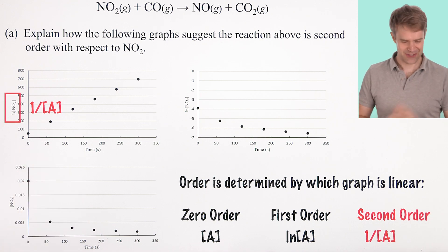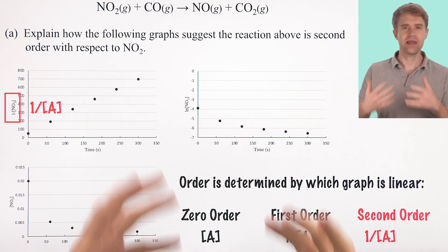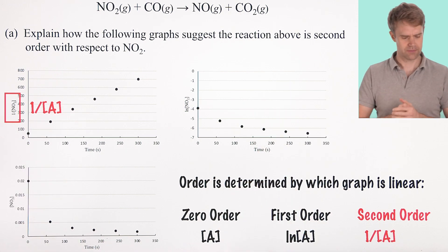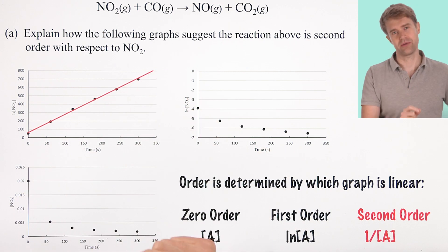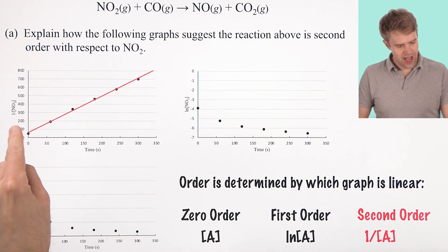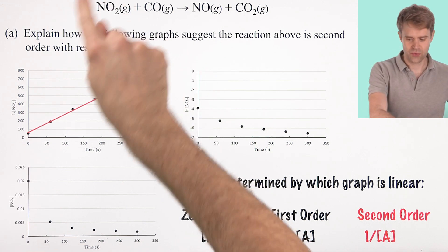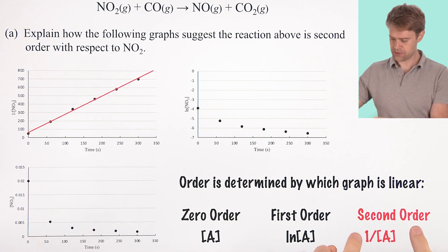There's mathematical reasons for the pattern, but on most questions, AP doesn't want you to solve equations. It just wants you to interpret the graphs. So, looking over at our three graphs here, we can see that only one has a linear fit. And that is the graph of time versus the inverse of the nitrogen dioxide concentration, NO2 here. That's the reactant that we're paying attention to.